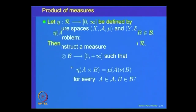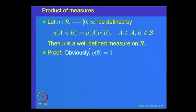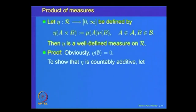To implement this, we define η on rectangles: η(A×B) = μ(A)·ν(B). This is clearly a well-defined set function. We want to claim it is actually a measure. Note η(∅) = 0 since if A or B is empty, the product is 0. We need to show η is countably additive.